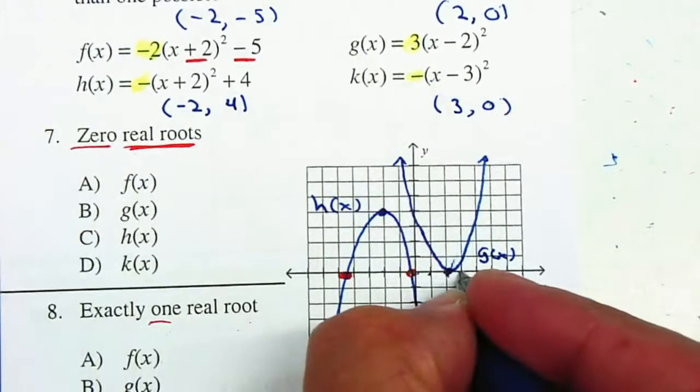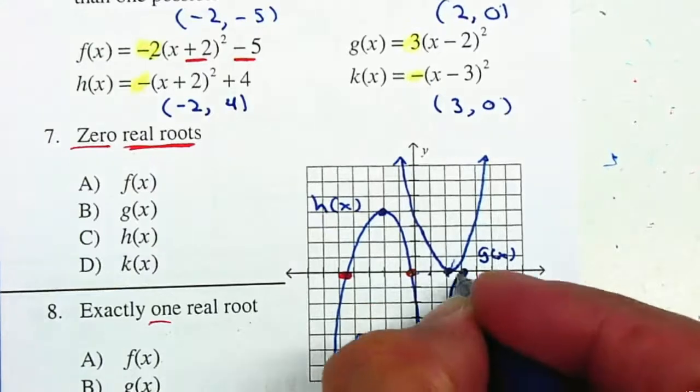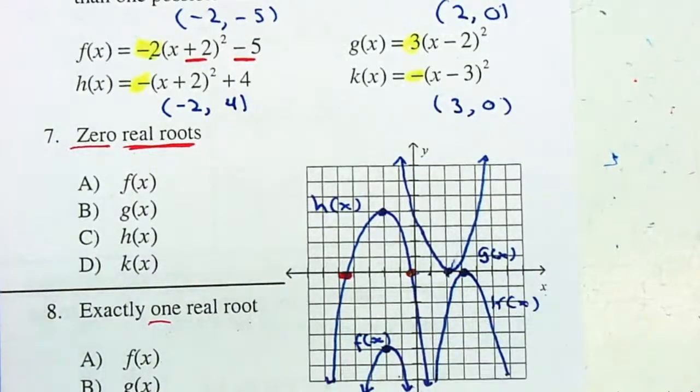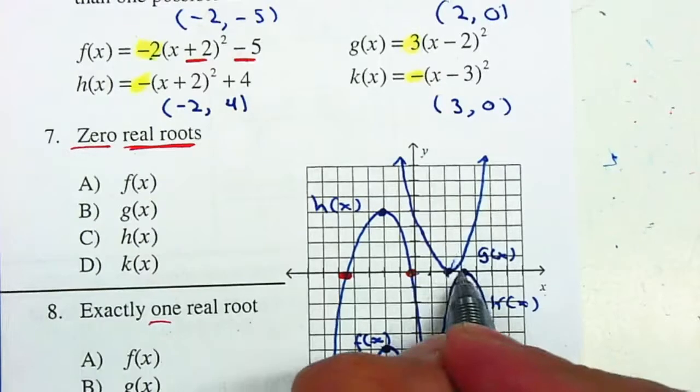And it's facing down. And that'll be k. And how many times does it cross the x-axis? 1.